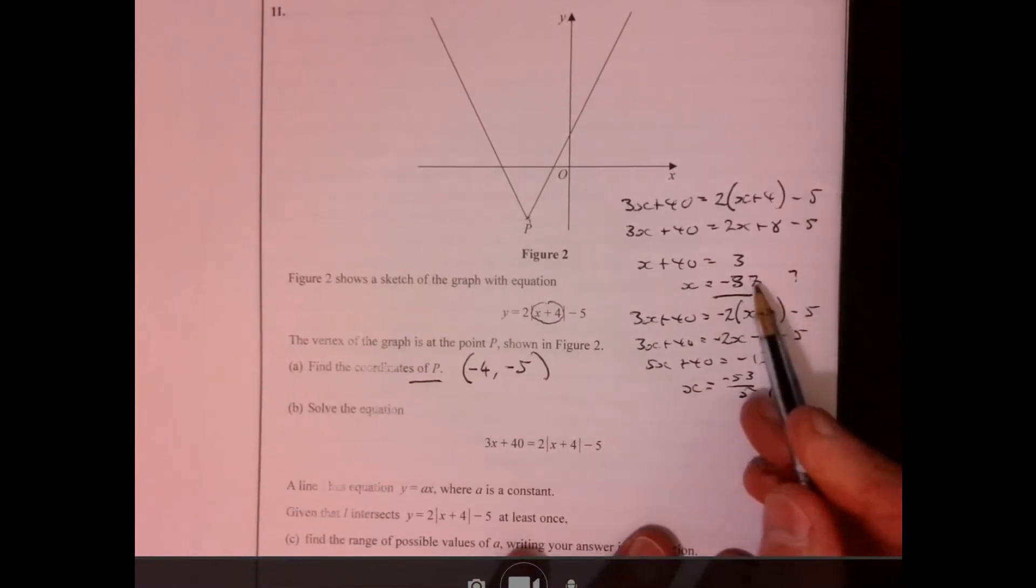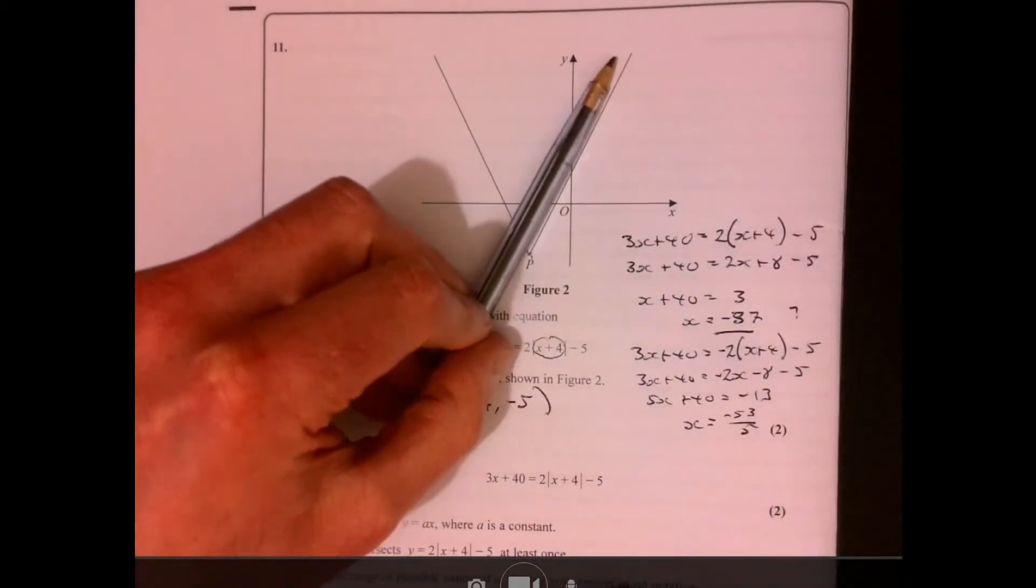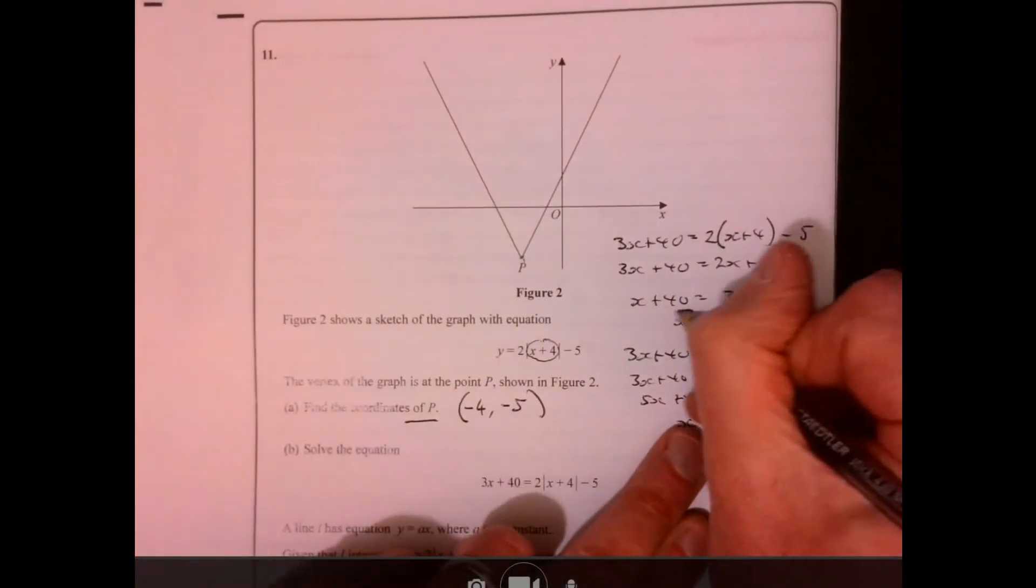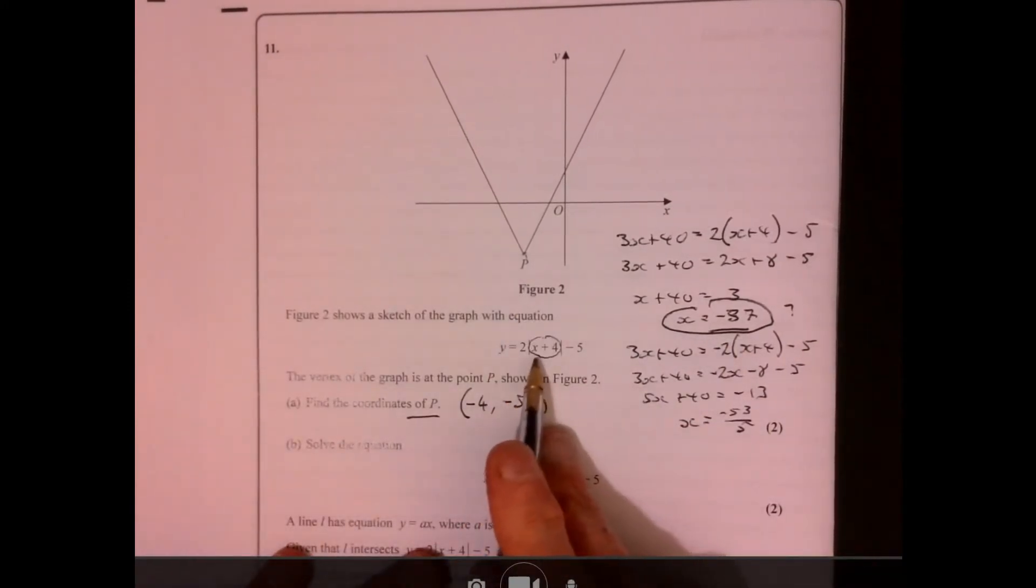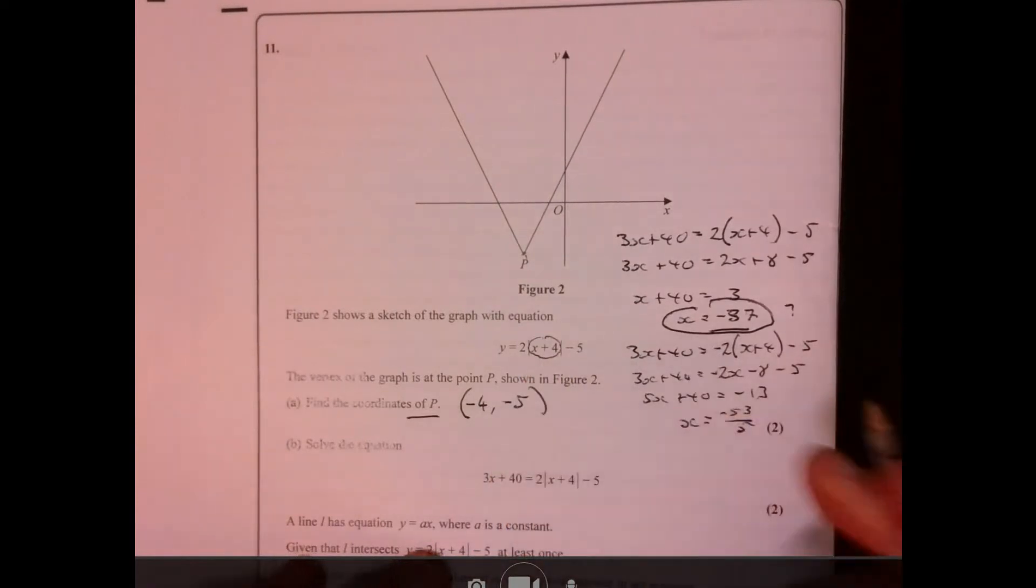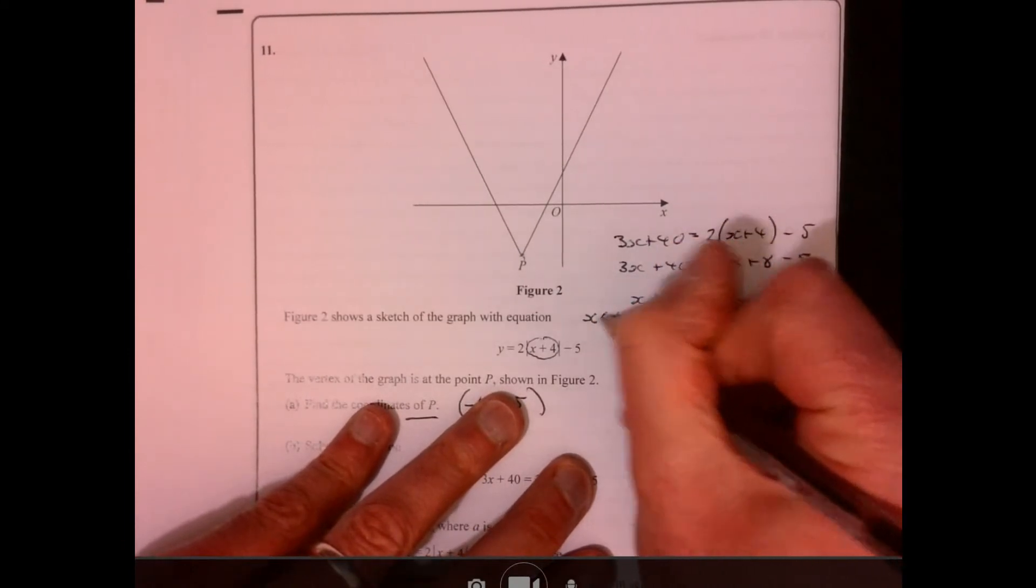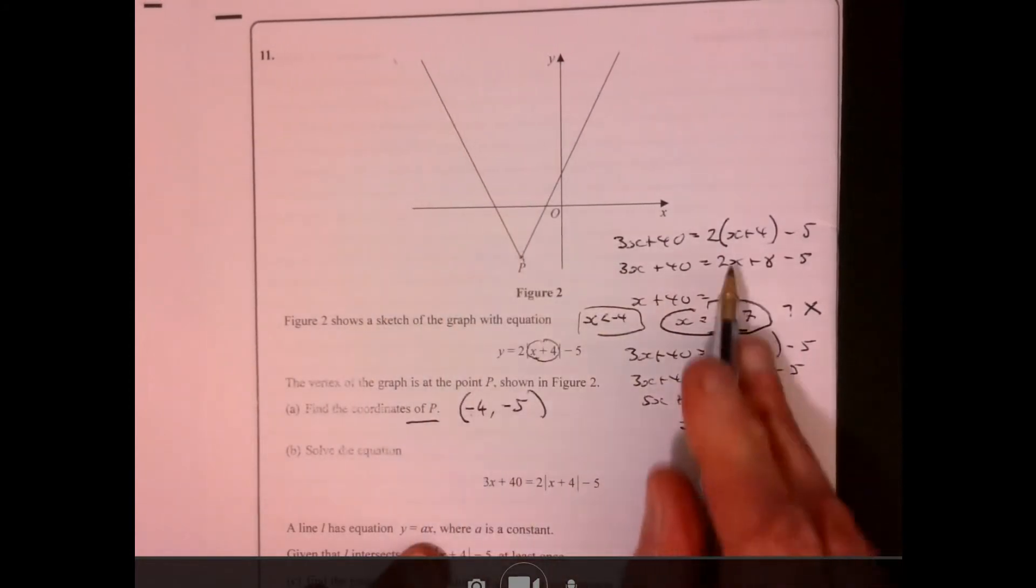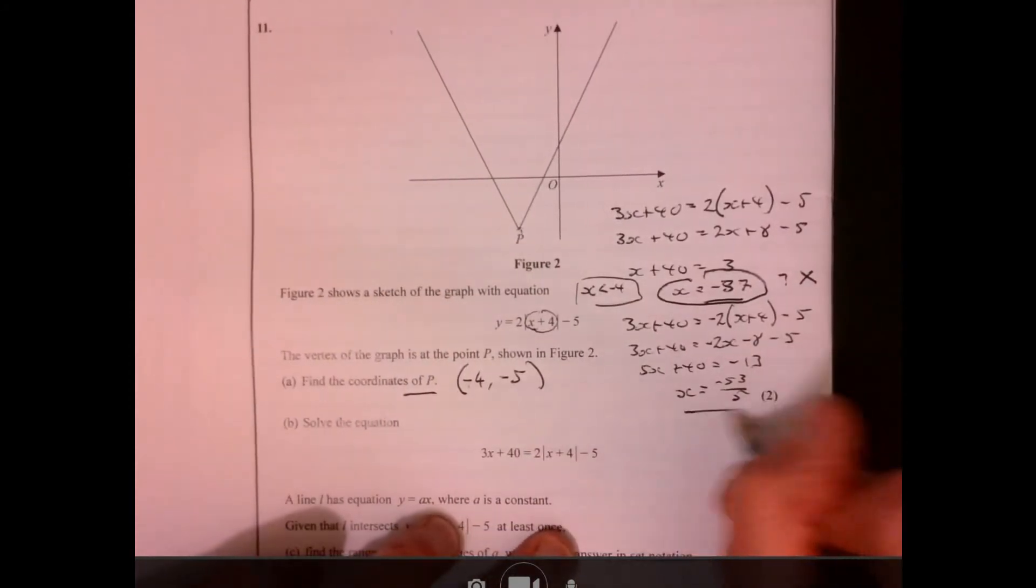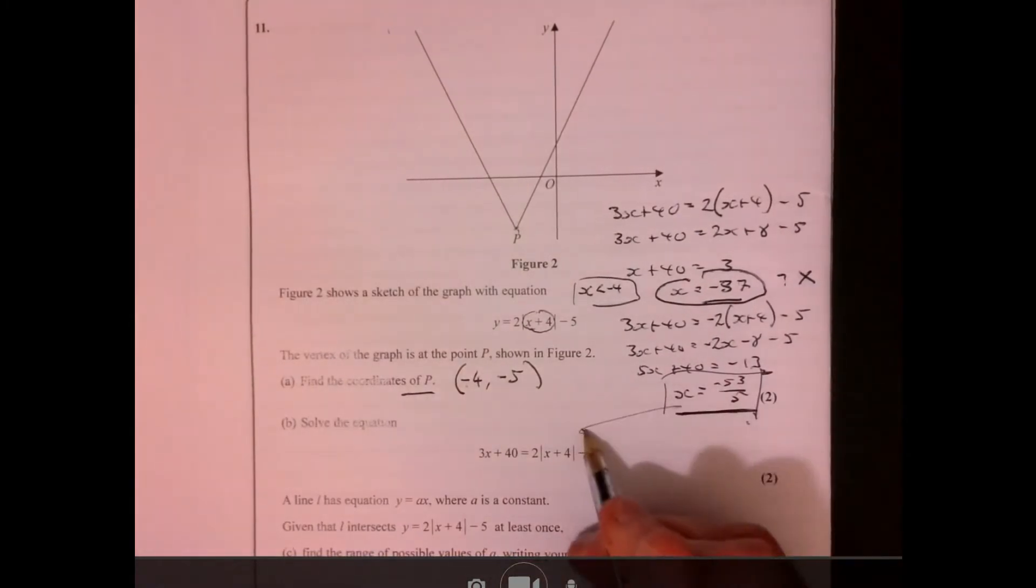Now I'm just going to come back to this value up here because this was like on the positive section. Now x, this number, is less than minus 4 because that was the lowest it can actually take. So that value doesn't work, because x is less than minus 4. Because once it goes into negatives, or less than minus 4, then it's going to be like this negative version that's going to be taken over. So that's going to be our answer there for this part just here.